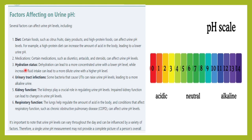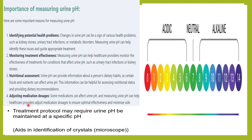Hydration status also matters. If the patient is dehydrated, the urine will be very concentrated and the pH level will be lower. If taking more fluids, urine will be more dilute and more on the alkaline side. Urinary tract infection — certain bacteria can raise urine pH. Certain medicines also need either an acidic or an alkaline urine.